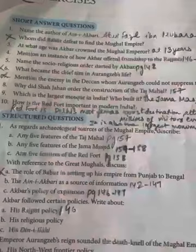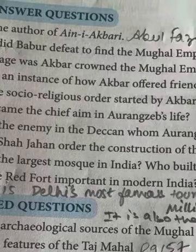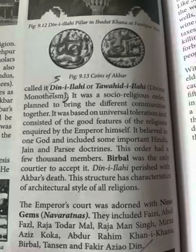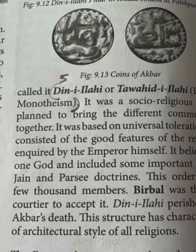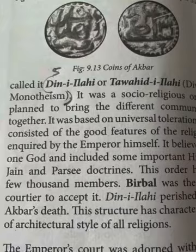Next question 5: Name the socio-religious order started by Akbar. Open page number 148, right hand side, after the figure, just below figure 9.13. The answer is Din-i-Ilahi, also called Tawhid-i-Ilahi — Divine Monotheism. This is your answer for question 5.